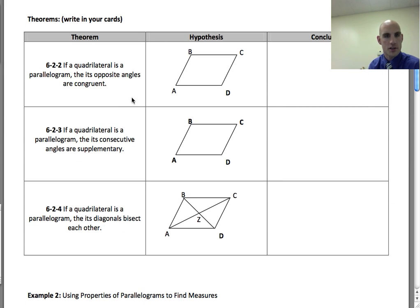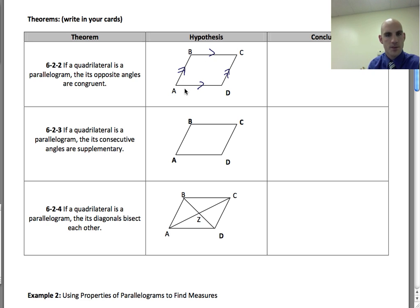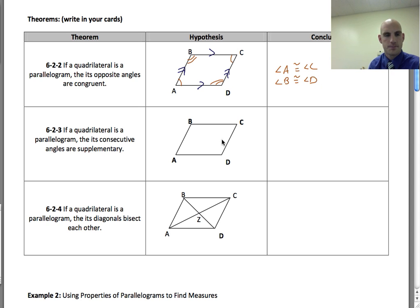Here are three more theorems for your cards. These deal with the attributes of parallelograms. The first one says: if a quadrilateral is a parallelogram, then its opposite angles are congruent. I've marked it as a parallelogram, and the conclusion I can make is that angle A is congruent to angle C, and angle B is congruent to angle D.